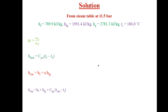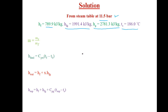From steam table at a pressure of 11.5 bar we can get: enthalpy of water hf = 789.9 kJ/kg, latent heat hfg = 1991.4 kJ/kg, enthalpy of dry saturated steam hg = 2781.3 kJ/kg, and saturation temperature Ts = 186°C at 11.5 bar.